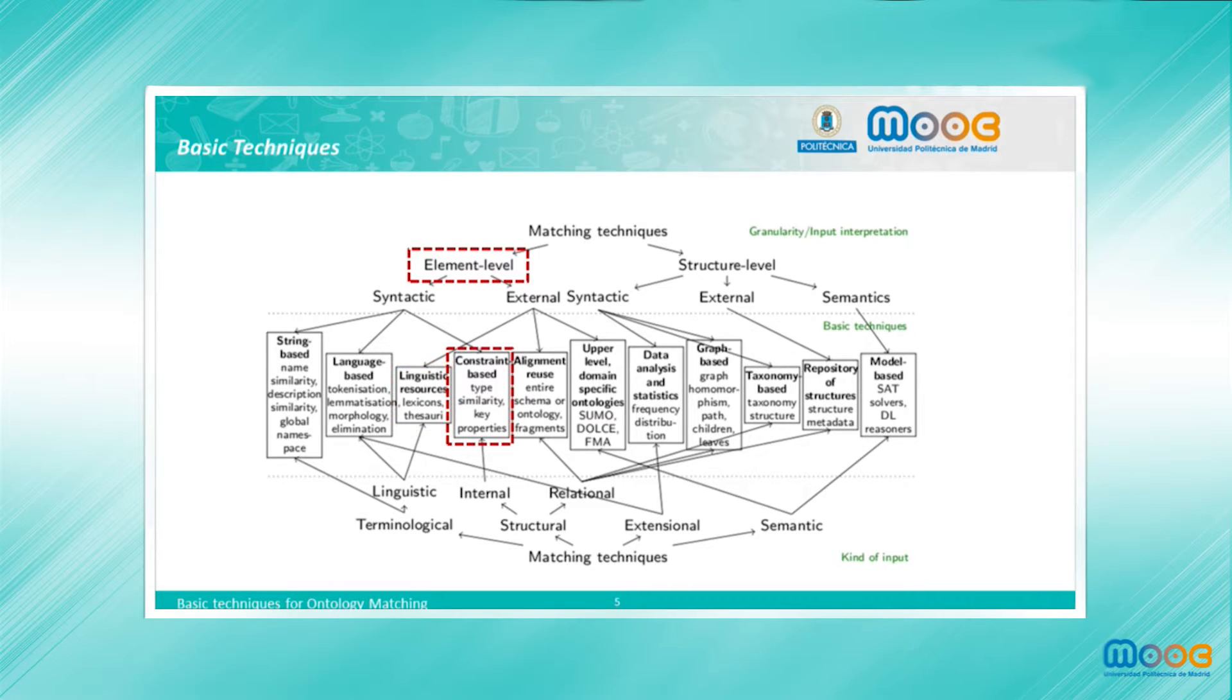There is also the constraint-based type of techniques which use the restrictions of ontology terms, such as cardinality, in order to compare entities and to infer relationships. Alignment reuse means the use of previously computed alignments between ontologies in order to obtain new ones. Also, there are techniques that might use as background knowledge other ontologies, either upper level ontologies or domain-specific ones.